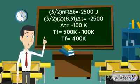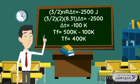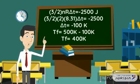Solving for the final temperature, we've got 500 Kelvin minus 100 Kelvin which is equal to 400 Kelvin. Our final temperature is equal to 400 Kelvin.